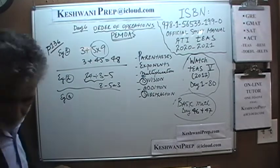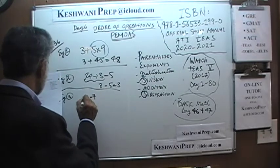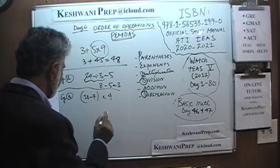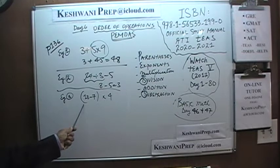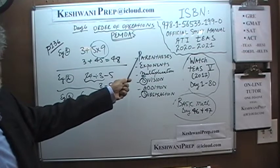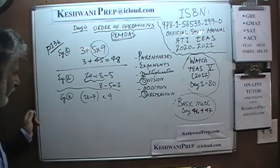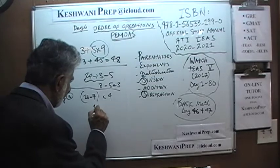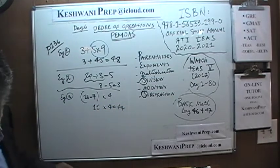Number 3: 18 minus 7, in parentheses, times 4. Here we have multiplication and parentheses — which one do we do first? We do the parentheses first. Everything that appears in the parentheses is taken care of first. So 18 minus 7 would be 11, and 11 times 4 would simply be 44.